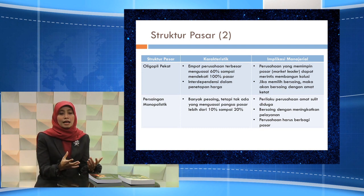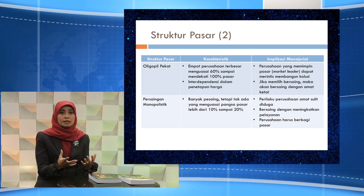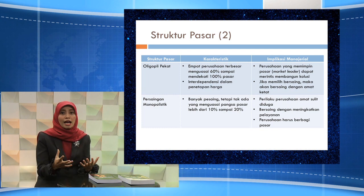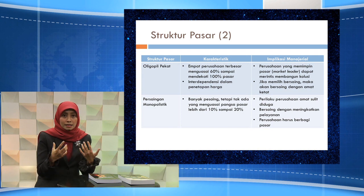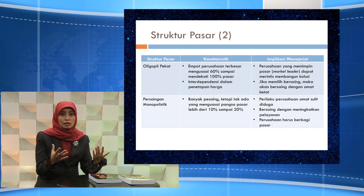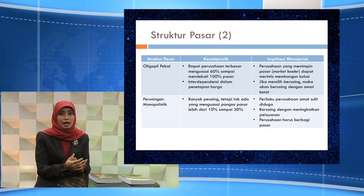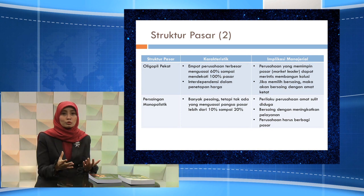Yang keempat adalah struktur pasar persaingan monopolistik. Pada kondisi ini banyak sekali pesaing, sehingga tidak ada perusahaan yang bisa menguasai pangsa pasar lebih dari 10-20%. Perilaku perusahaan sangat sulit untuk diduga dan mereka biasanya bersaing satu sama lain dengan cara meningkatkan pelayanan. Perusahaan dalam kondisi pasar ini harus berupaya untuk membagi pasar mereka dengan baik.